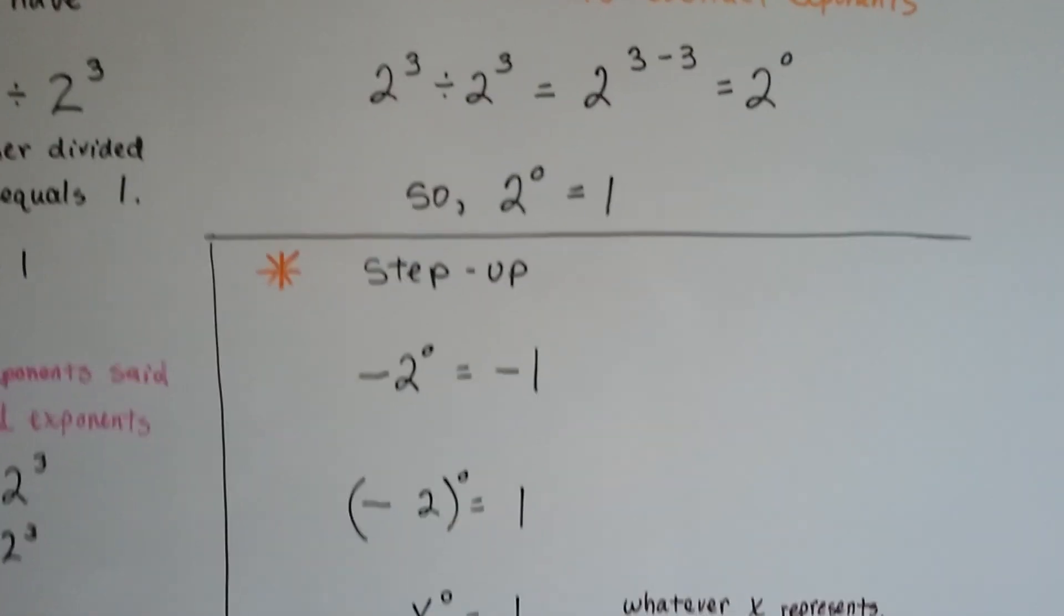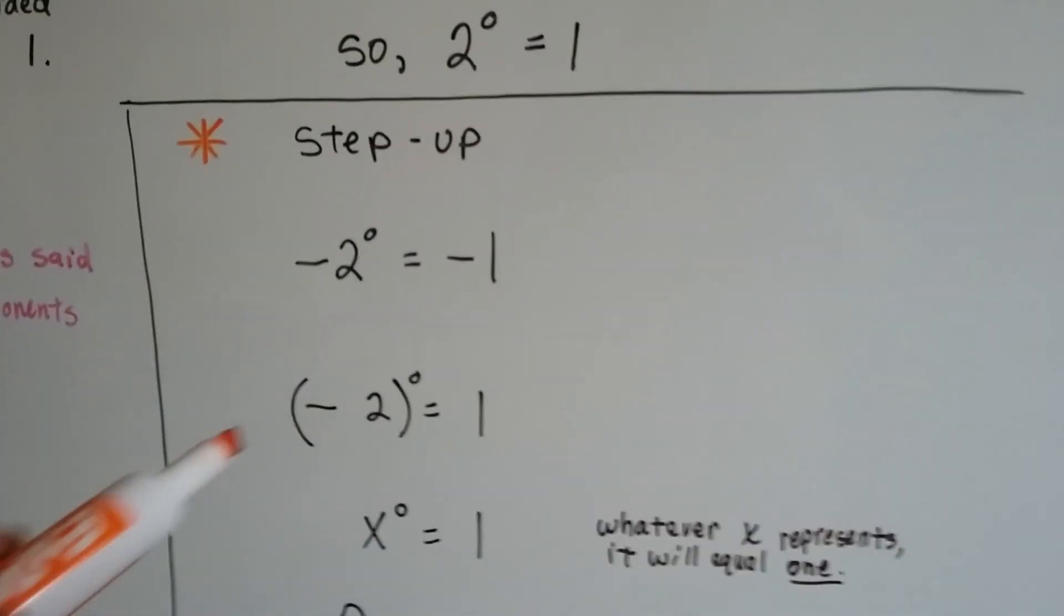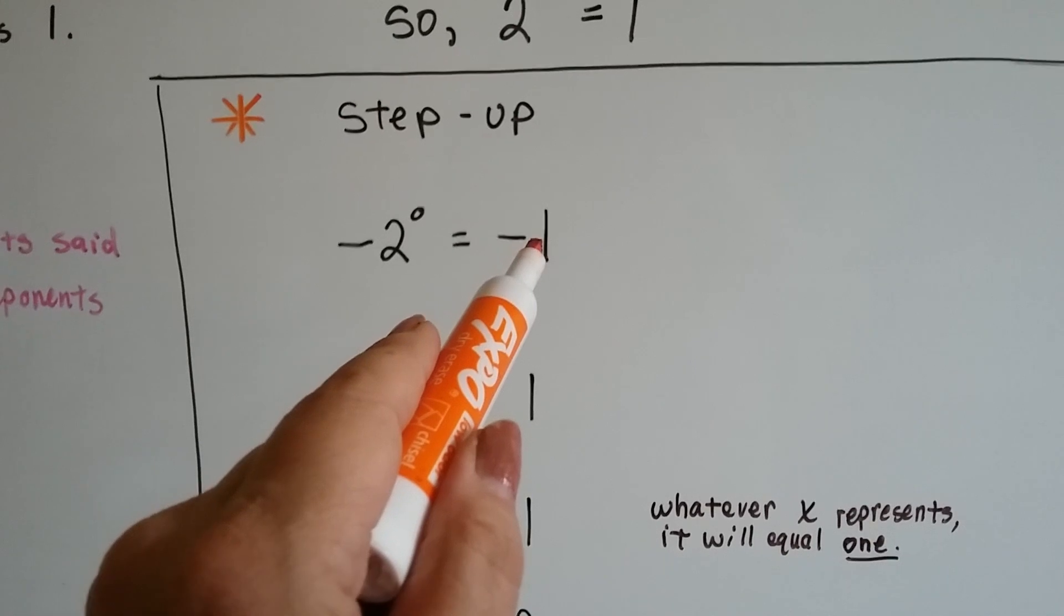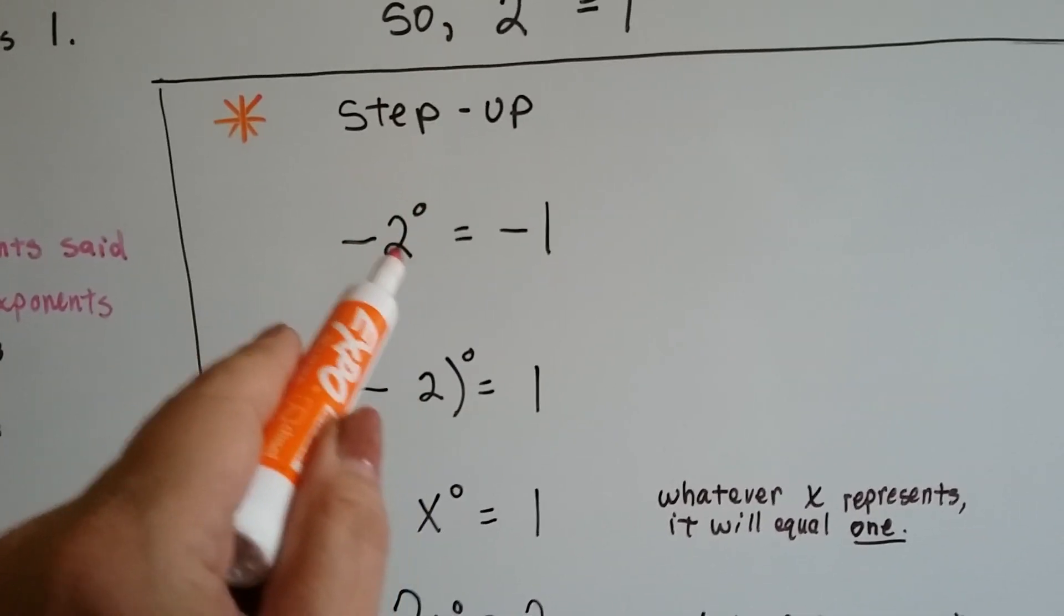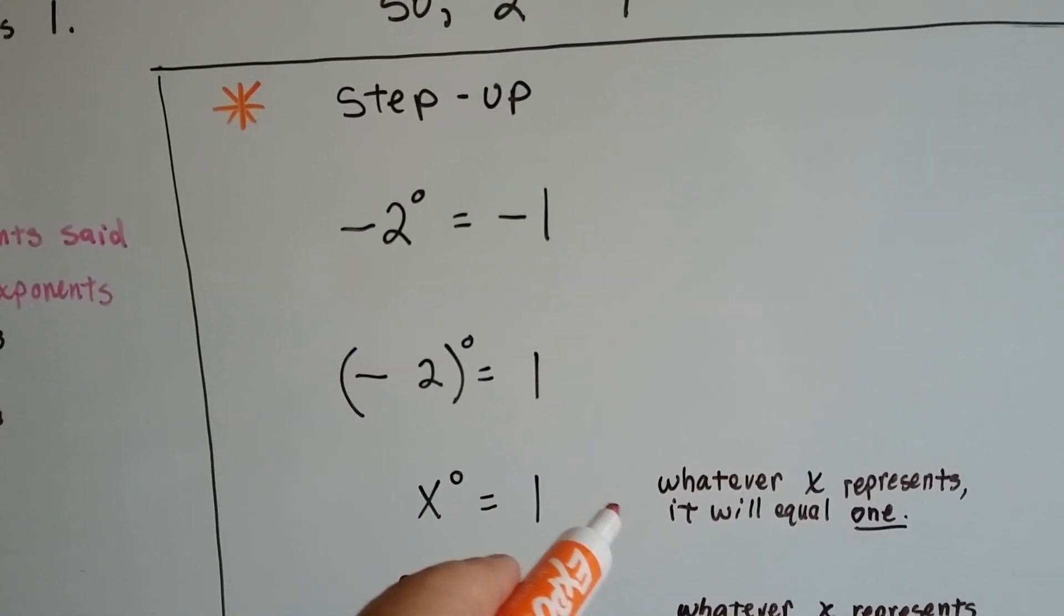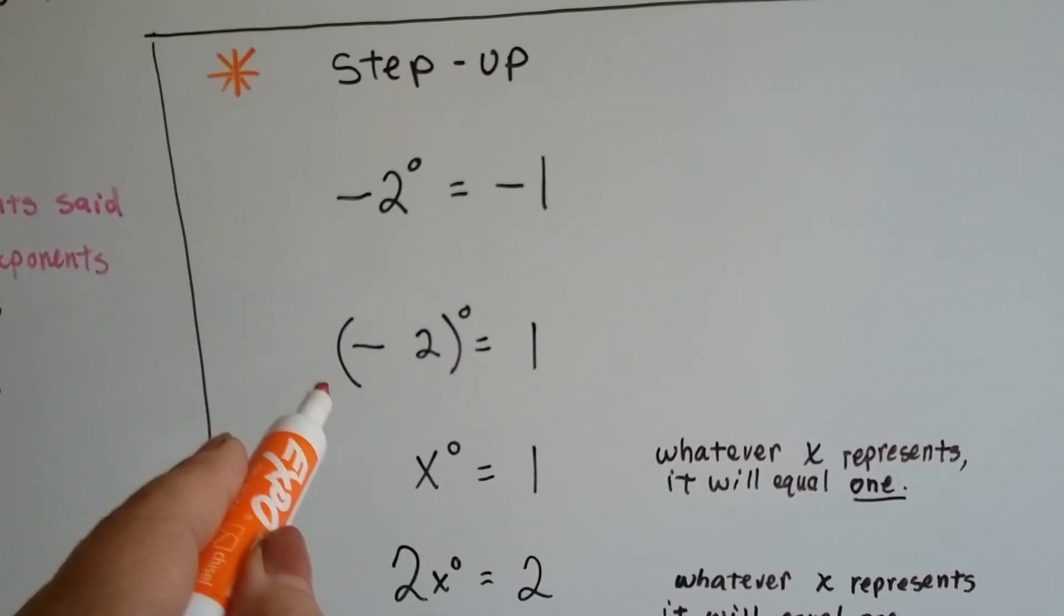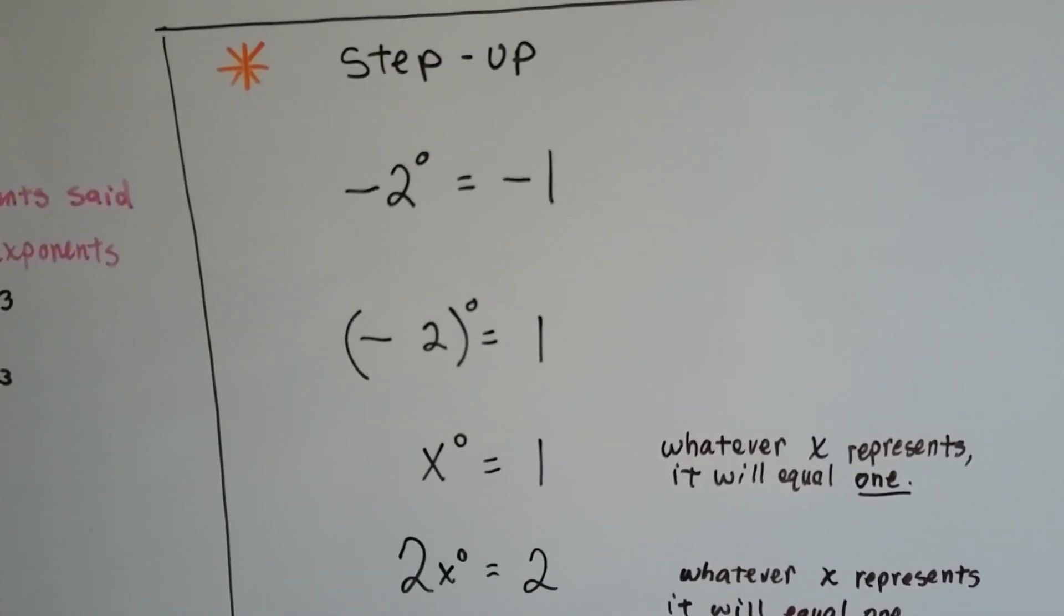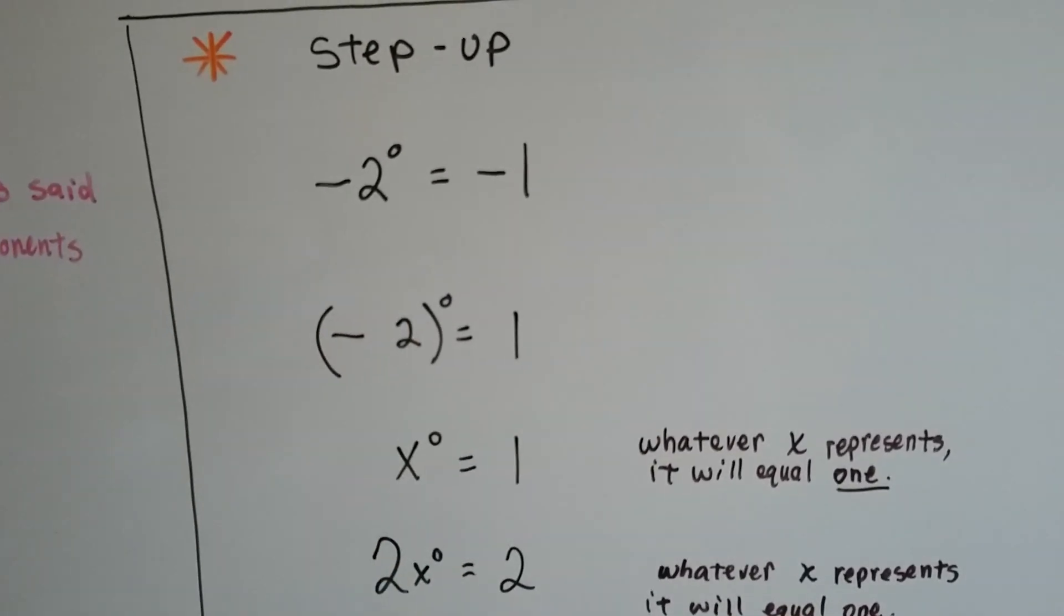Now to take one step up, for those who are interested, if we have negative 2 to the zero power, it's going to be negative 1. Since this represents 1 and we've got a negative sign in front of it, it's going to be negative 1. But if it's in parentheses and the exponent's on the outside, then it's going to be a positive 1. We'll get into that more in the future.